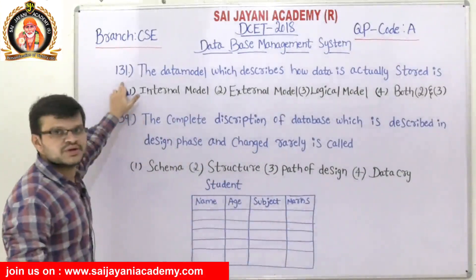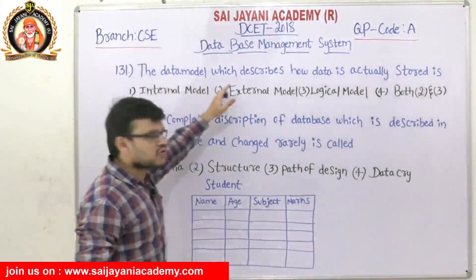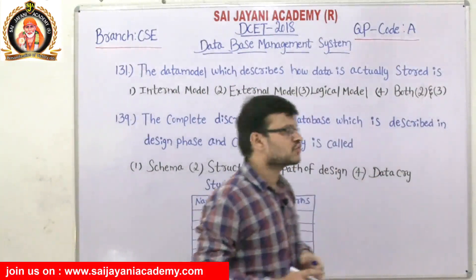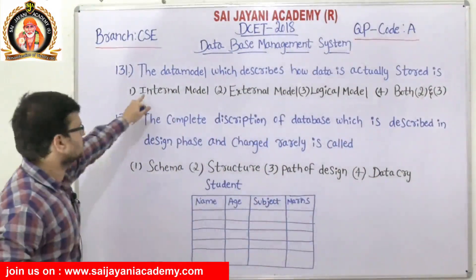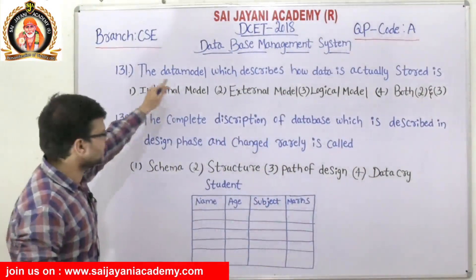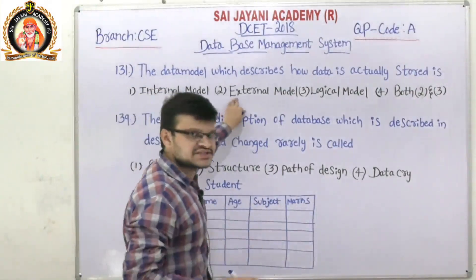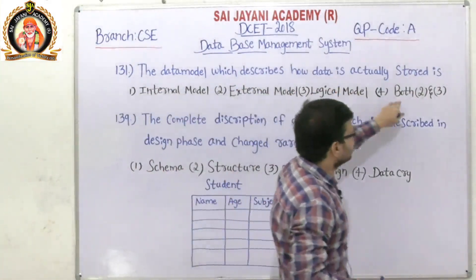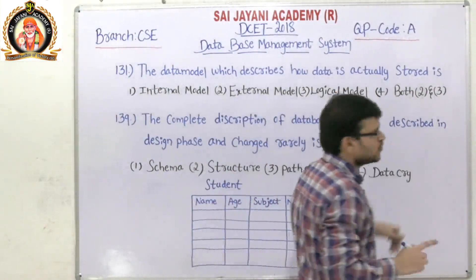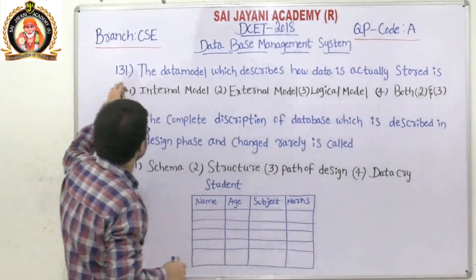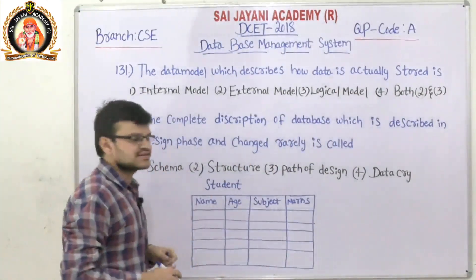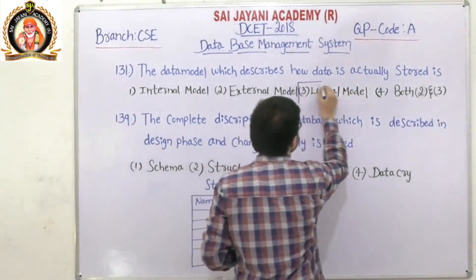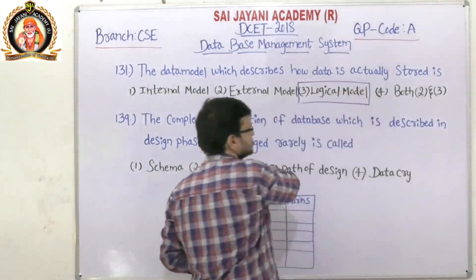Question number 131: The data model which describes how data is actually stored — options are internal model, external model, logical model, and both 2 and 3. For question 131, the third option, logical model, is the right answer.